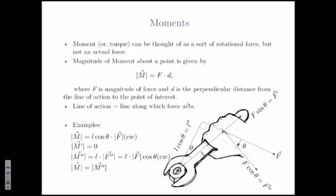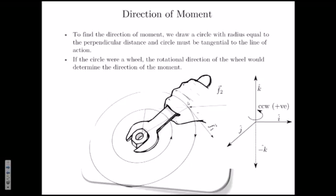In general, some moments will be positive and some negative. To determine direction, use a simple graphical construction. Choosing the pivot point as the center, draw a circle whose radius equals the perpendicular distance. That circle will be tangent to the line of action. Imagine that radius is a wheel — if you push the wheel in the direction of the force, which way does it rotate? If clockwise, the moment is negative. If counterclockwise, it's positive. Pretty soon you'll be able to do this in your head without drawing the circles.